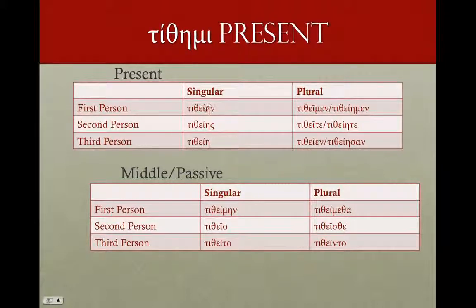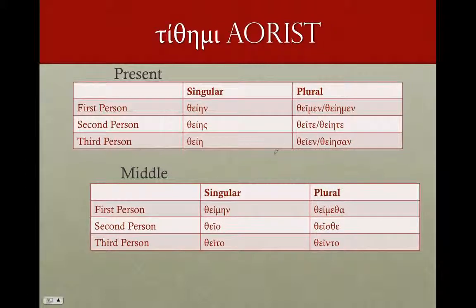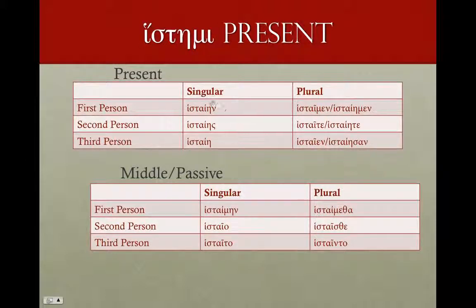τίθημι — very, very similar. Long in the singular, short in the plural. τιθείην, τιθείης, τιθείη. In the plural: τιθεῖμεν, τιθεῖτε, τιθεῖεν. Or with the long version: τιθείημεν, τιθείητε, τιθείησαν. Still having that iota marking. We'll see those long versions show up in mi verbs and contracts. Middle is perfectly regular: τιθείμην, τιθεῖο, τιθεῖτο, τιθείμεθα, τιθεῖσθε, τιθεῖντο. In the aorist of τίθημι — instead of the epsilon we have the alpha — θείην, the long version, θείης, θείη. Short plural: θεῖμεν, θεῖτε, θεῖεν. Or the long version: θείημεν, θείητε, θείησαν.